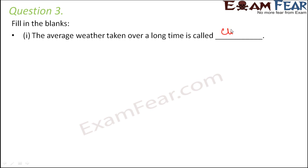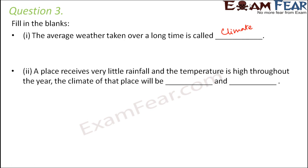Question number three: fill in the blanks — the average weather taken over a long time is called... climate. That is how climate is different from weather. Weather is about daily conditions — it changes on a daily basis. When we talk about the environmental conditions of a particular day, we are talking about weather. But when we talk about the average weather over maybe 20 to 25 years, that is the climate of that place.